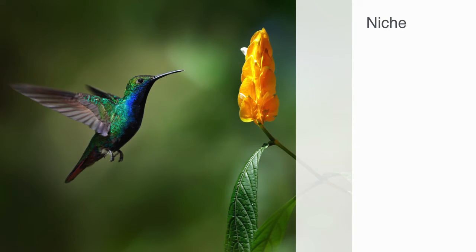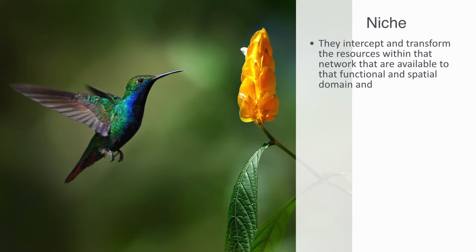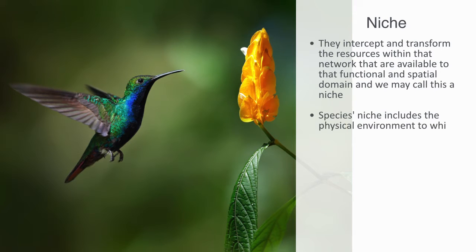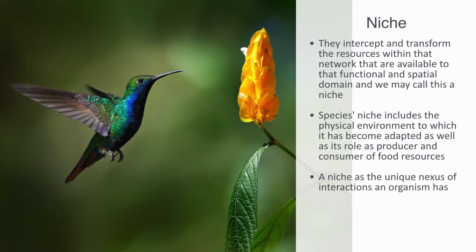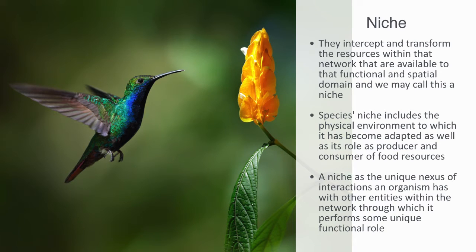All biological creatures occupy some local domain within the network of an ecosystem wherein they intercept and transform the resources available to that functional and spatial domain — we call this a niche. A niche is defined here as the function or position of a species within an ecological community, including the physical environment to which it has become adapted, as well as its role as a producer and consumer of food resources. By understanding biotic and abiotic parameters such as temperature range, humidity, and soil nutrients, we can define a creature's niche. The realized niche is where it currently exists; the fundamental or potential niche is where it could potentially be found.